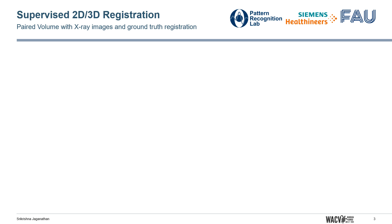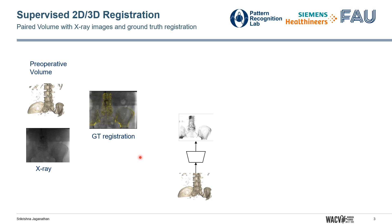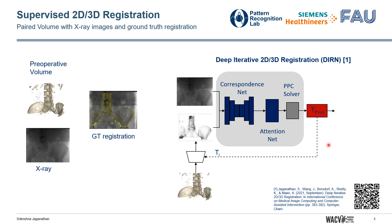To learn the 2D-3D registration task using supervised techniques, we need access to an X-ray image along with the preoperative CT volume of the same patient with ground truth registration annotation. Once we have access to such data, we can render a DRR from the CT volume. This establishes a 2D basis with the X-ray image, and we can use the DRR along with the input X-ray as inputs to the neural network to predict the 3D transformation of the CT volume such that when the CT volume is projected over the X-ray image, the overlay error is minimized.